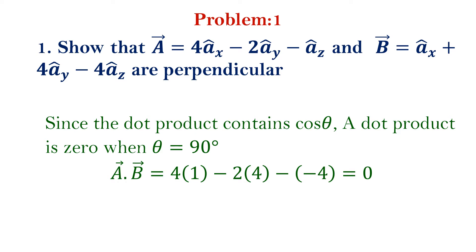If two vectors are perpendicular, the angle between them is equal to 90 degrees. If we consider the dot product, when we get the dot product equal to 0 — which happens when we substitute theta equal to 90 degrees — we get the dot product equal to 0.